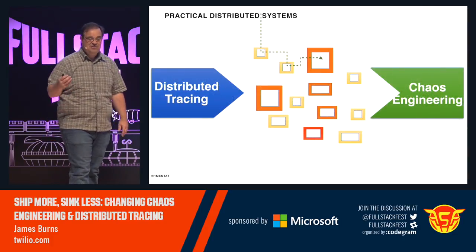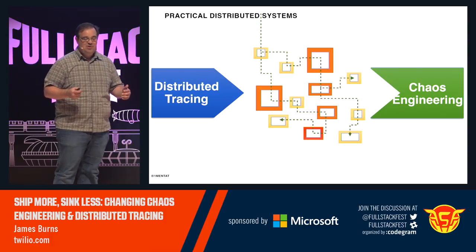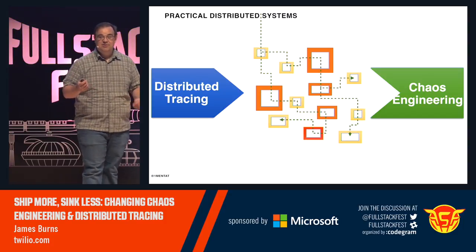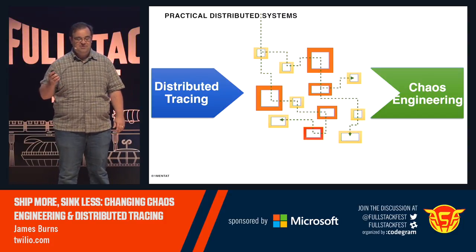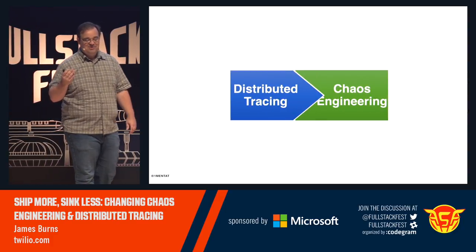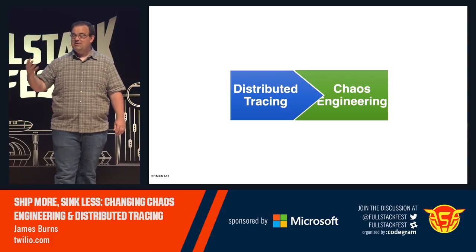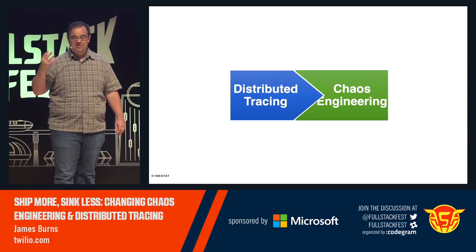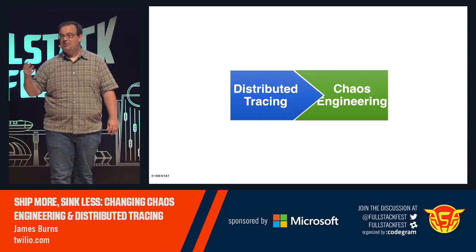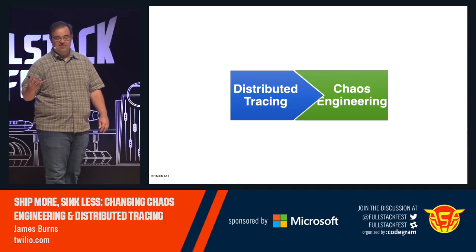Distributed tracing and chaos engineering: distributed tracing makes our services observable, and chaos engineering proves our services' resilience. Together they unlock the power of microservices. We go from a simple system to one that's complex, but now we've made it powerfully observable and powerfully resilient, and we can start to unlock that velocity without it costing our customers.